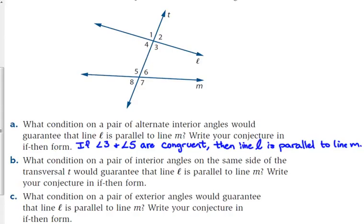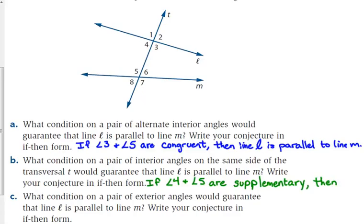Statement B: what condition on a pair of interior angles on the same side of the transversal guarantees that line M is parallel to line L? A pair of same-side interior angles would be angles 4 and 5. Are they congruent or supplementary? Supplementary. Same side are supplementary — three S's together, that's a good way to remember. If angles 4 and 5 are supplementary, then lines L and M are parallel.